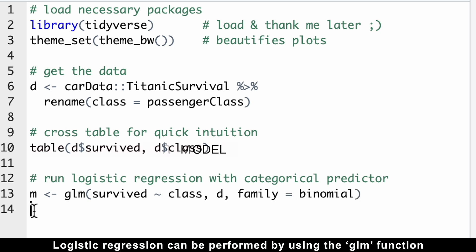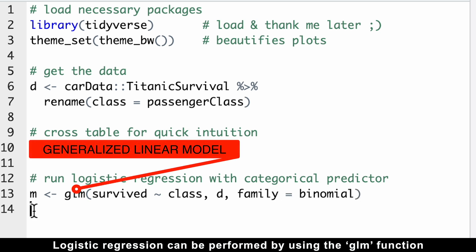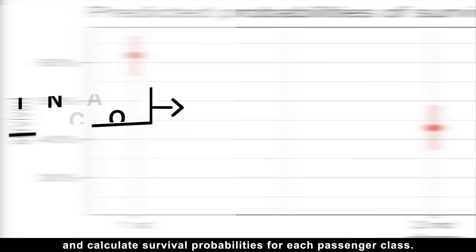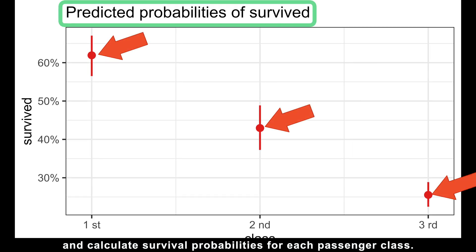But this intuition alone doesn't provide concrete numbers such as probabilities or odds of survival, and that's why we need to ask logistic regression for it. Logistic regression can be performed by using the GLM function with the binomial family. This family enables us to model binary outcomes and calculate survival probabilities for each passenger class.